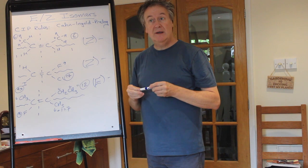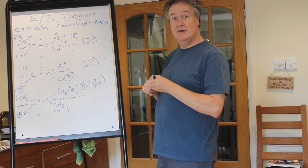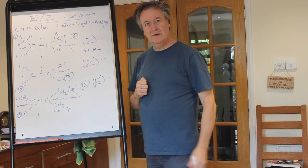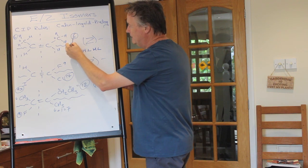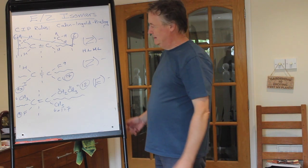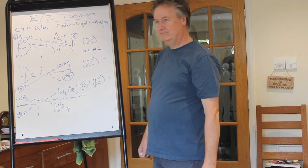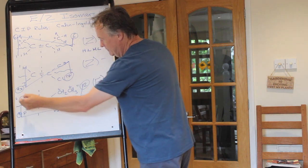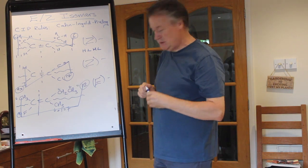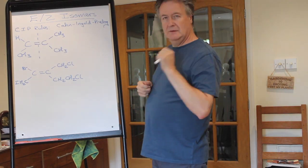My camera operator shared a useful memory trick: if you go high to low, high to low across the double bond, the line you trace looks like a Z shape. And high to low, high to low on this one is also Z-like. Then for E, high to low and then the line goes through the bond making an E shape. I've never heard that before - I think that's very good and I will remember that for next time I teach it.